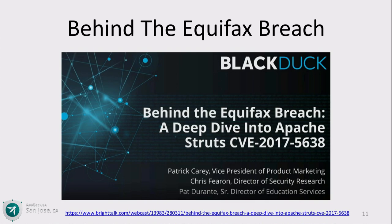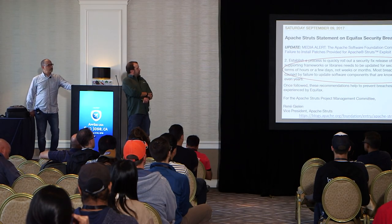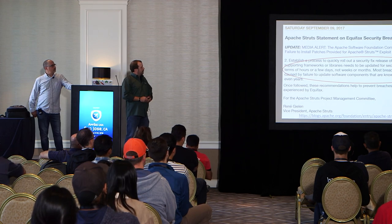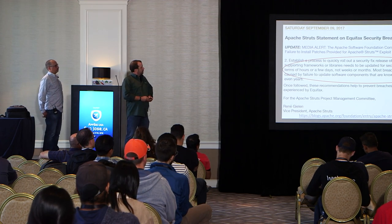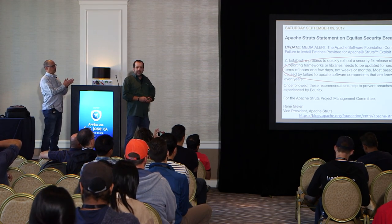If you're interested in that exploit, I encourage you to look at this webcast by Black Duck. We can get useful information by looking at the statement made on the Apache Software Foundation blog by the Apache Struts team, specifically Rene Geeland. He made a number of things worth pointing out. Most breaches we become aware of are caused by failure to update software components that are known to be vulnerable for months or even years. Indeed, that was the case at Equifax.